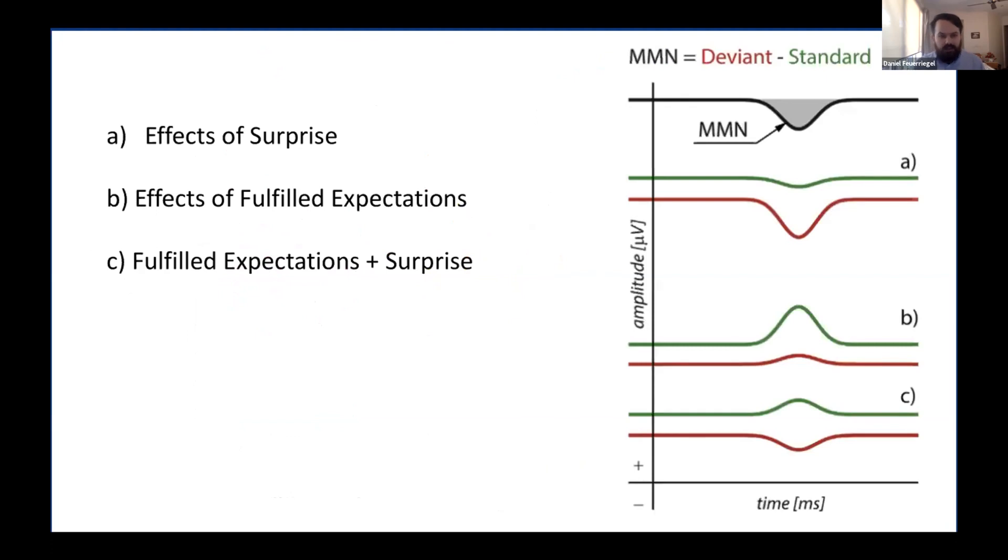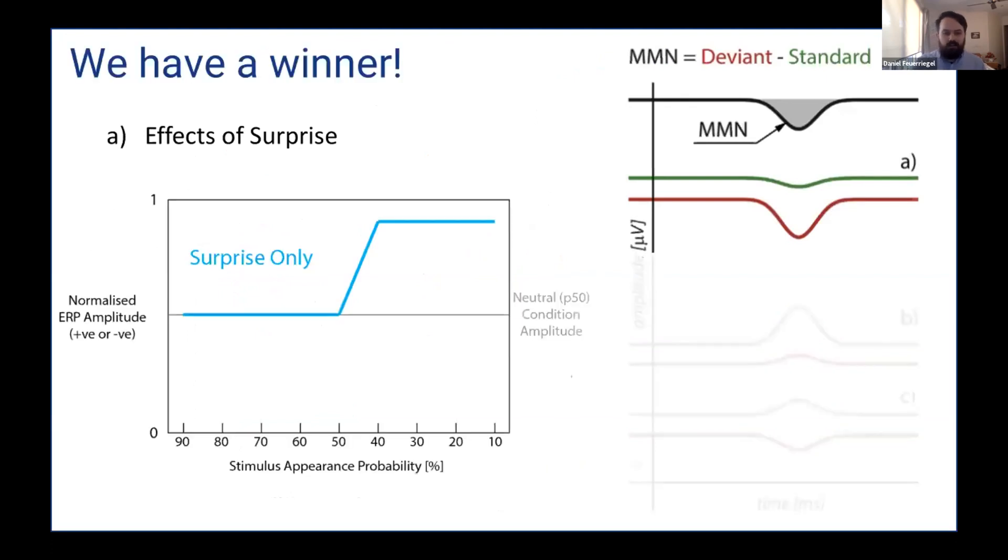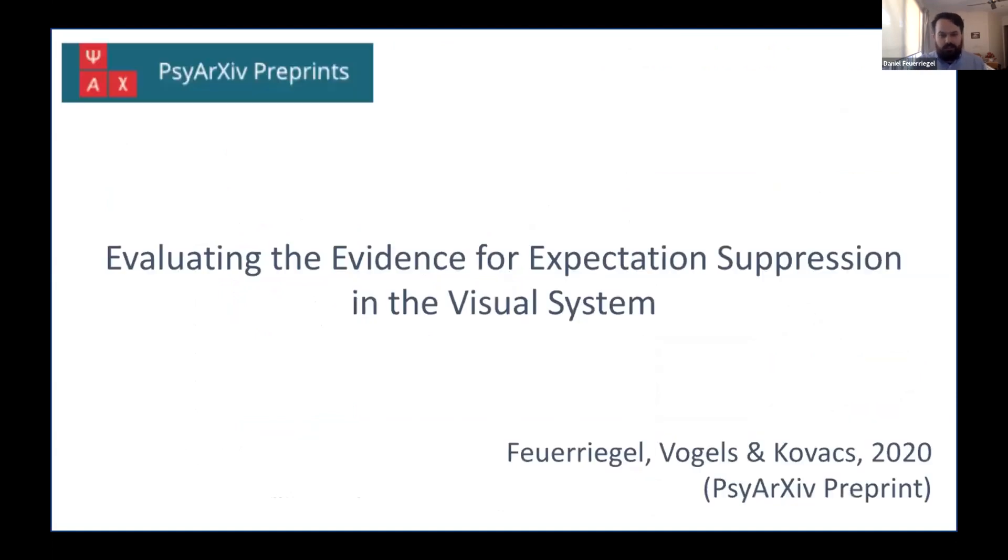So out of these three competing hypotheses, I think that we have a clear winner, that there are effects of surprise in particular, but not really effects of expectation suppression. And this might be surprising to you based on the literature. So we actually did a review looking at expectation in the visual system. And we've found that there's actually very scant or inconsistent evidence for this compared to neutral conditions, and especially almost absent effects in electrophysiological recordings as well.